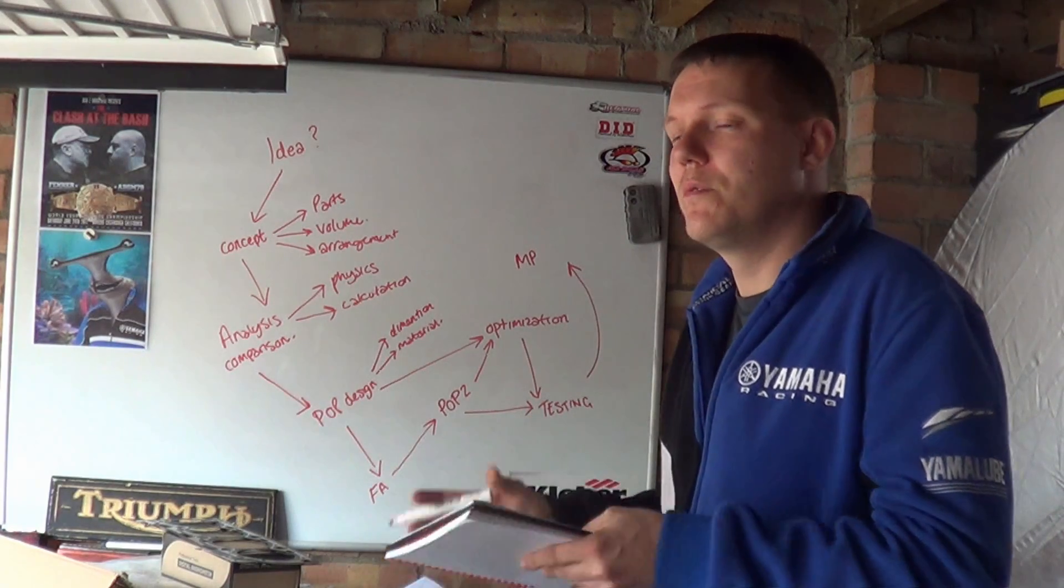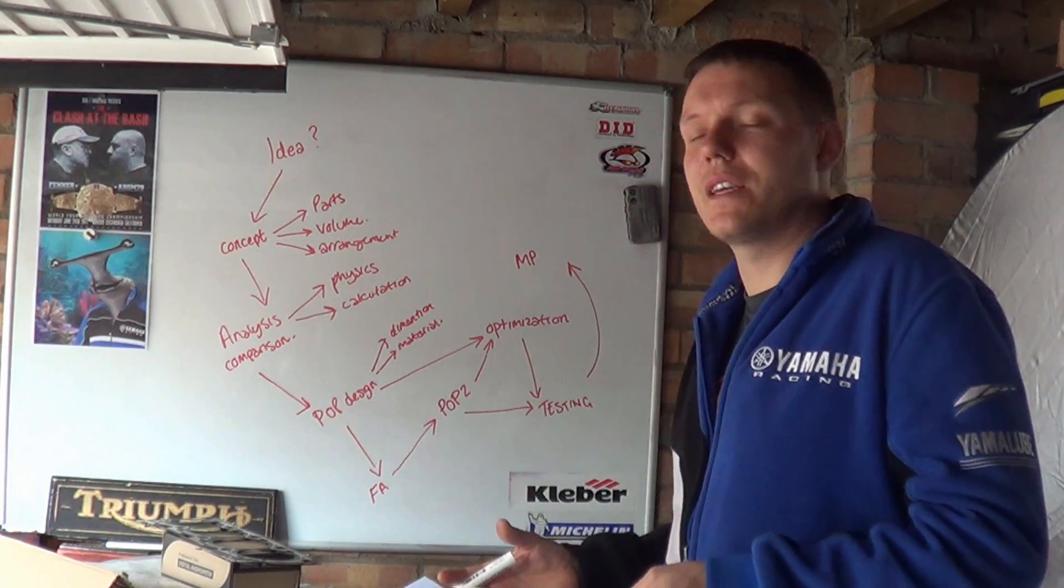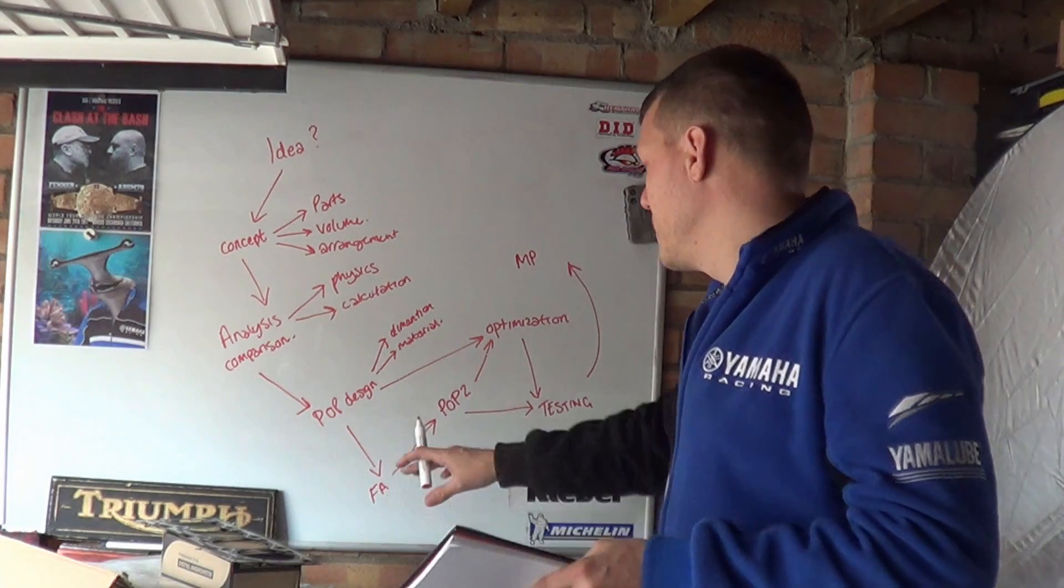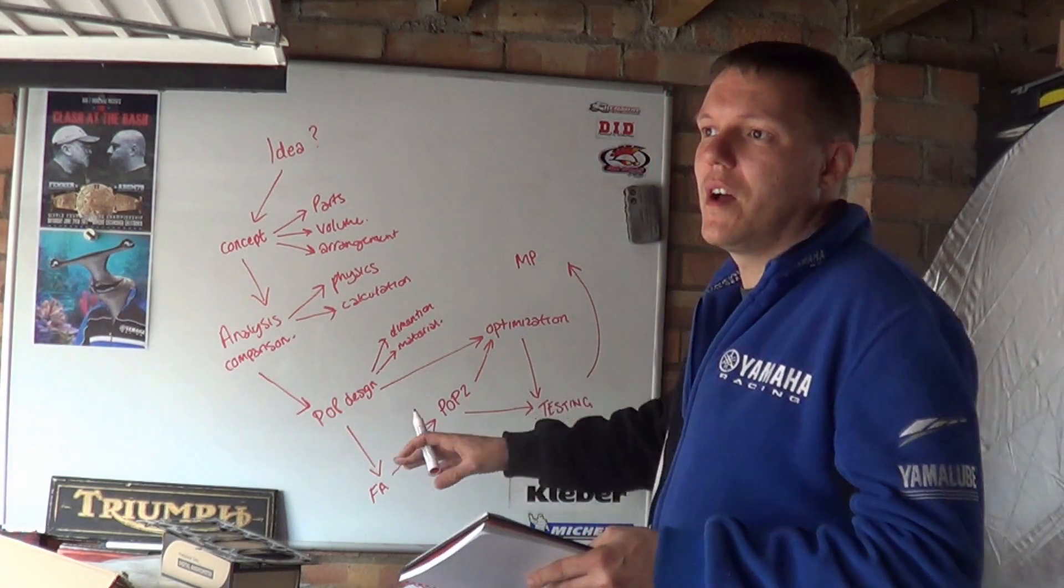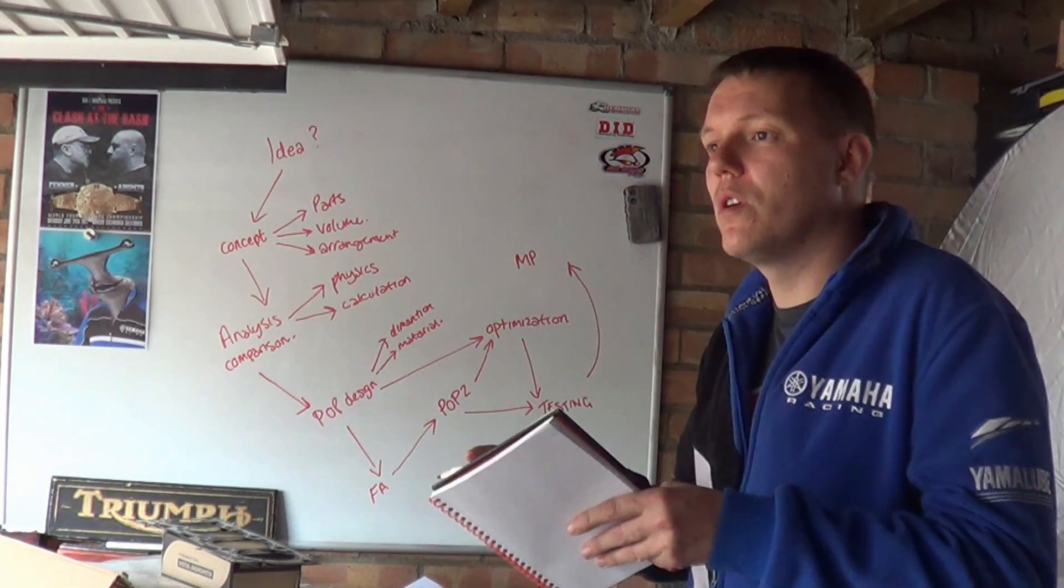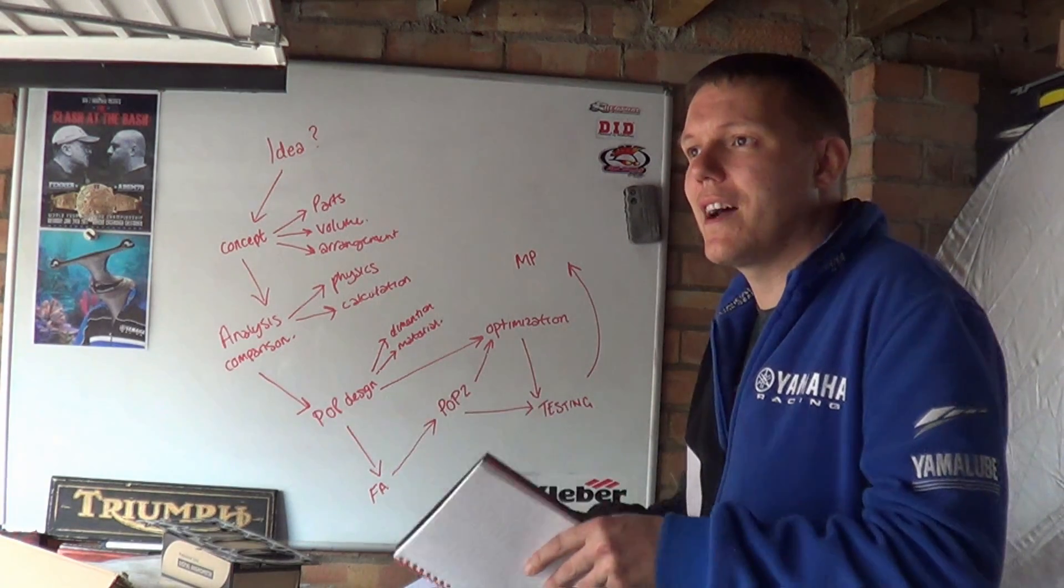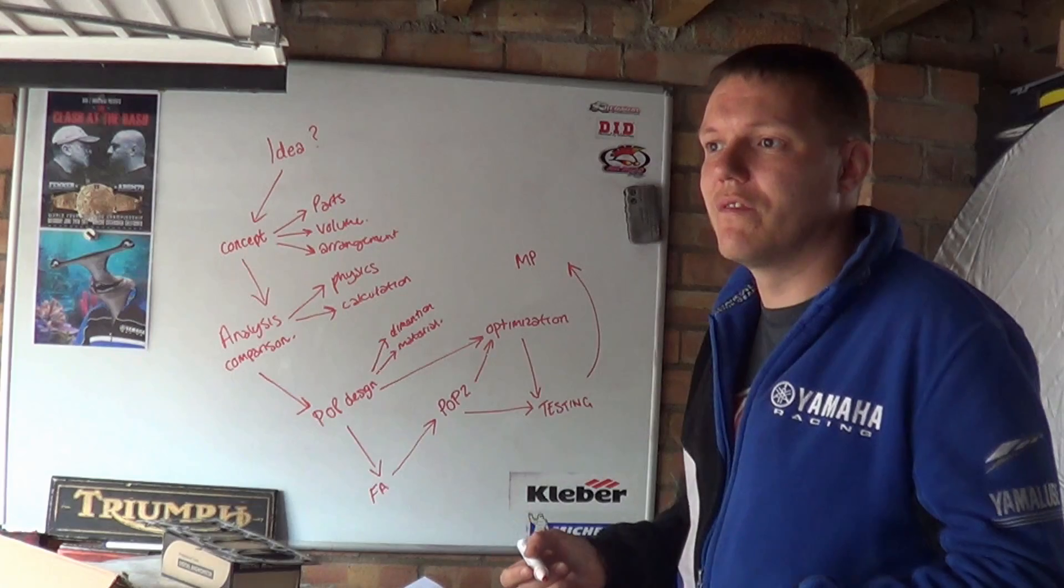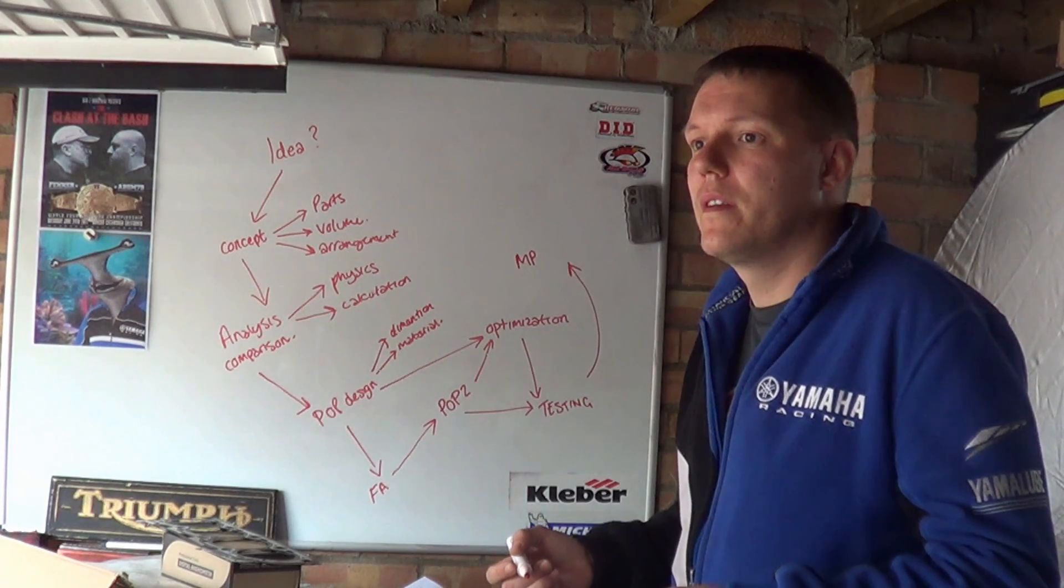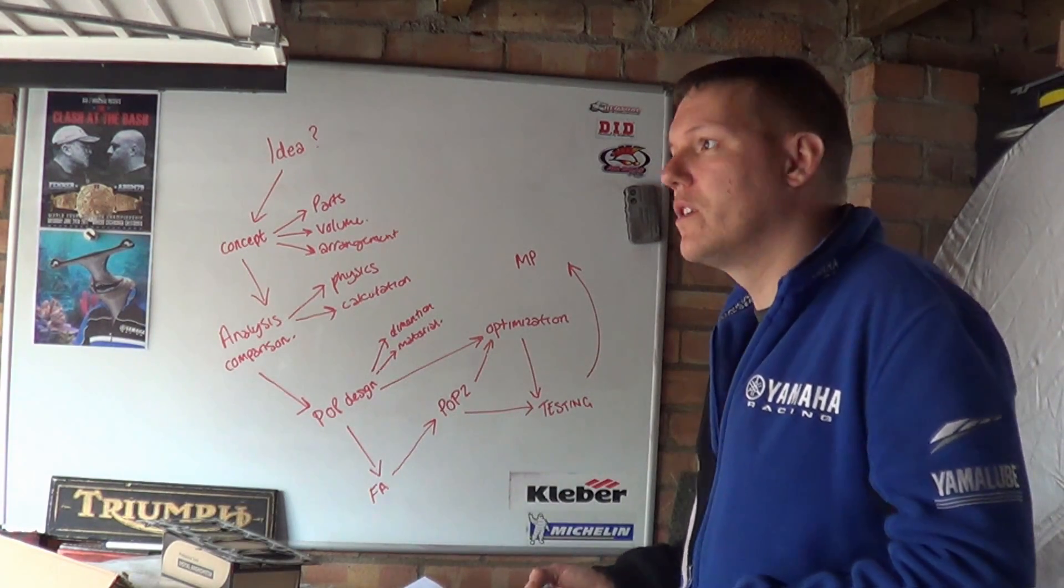But in mass production, you don't want to be doing that. You want to be casting things. So you go off from your original POP 1 or POP 2 or something like that. You go away from your prototype, which has very specific parts that are made to do exactly that. Now you have to start considering the mass production way of doing it.